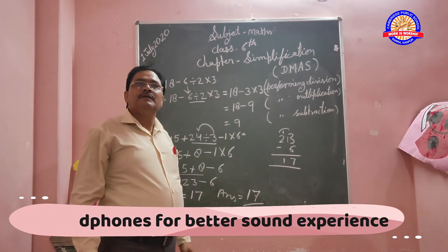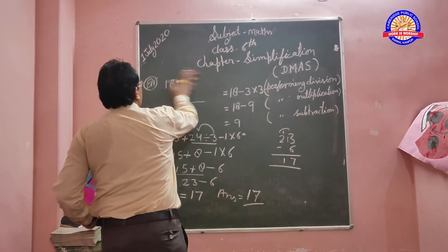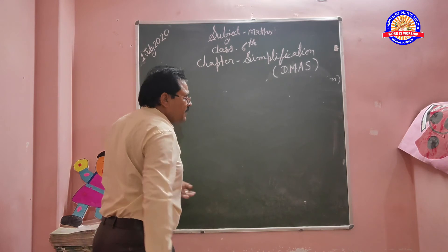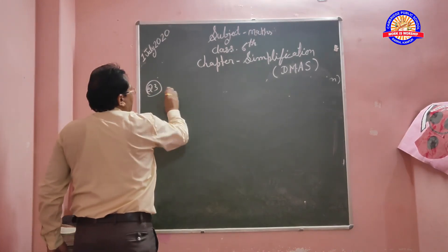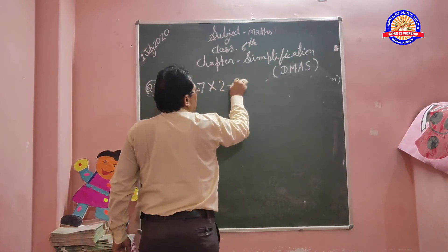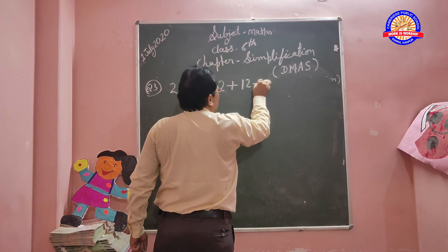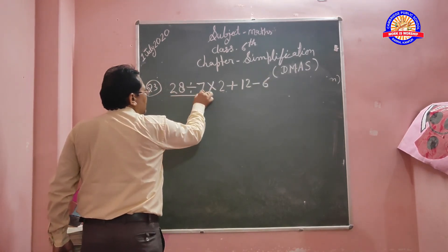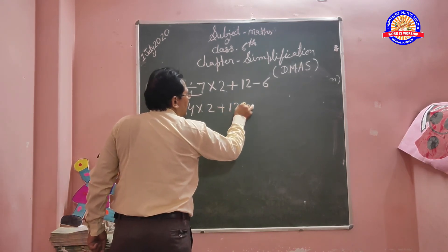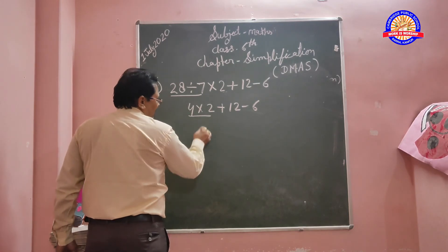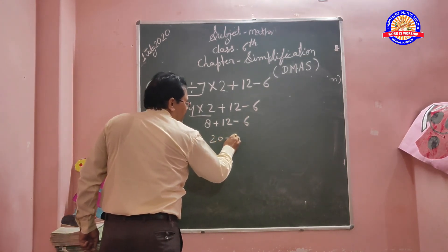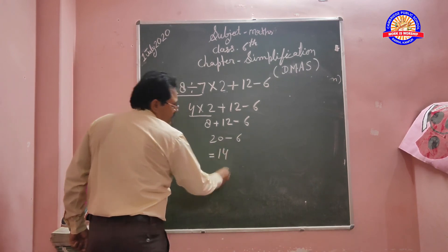Question number 3: 28 divided by 7 into 2 plus 12 minus 6. Firstly, divide 28 by 7, answer is 4. So 4 into 2 plus 12 minus 6. Then we multiply: 8 plus 12 minus 6. Then 12 plus 8 equals 20. 20 minus 6 equals 14.